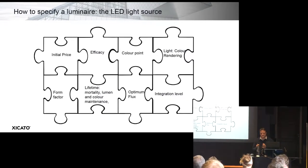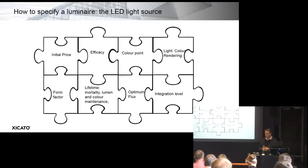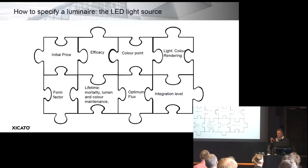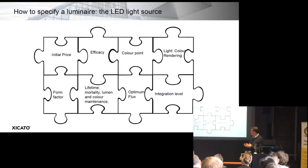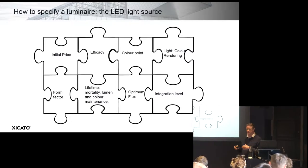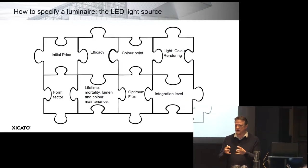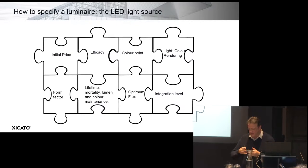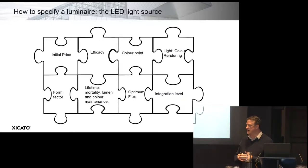I kick off this quartet of mini-talks on specifying a luminaire by talking about the light source itself. My fellow speakers will come on to optics, build quality and this sort of thing, but it seems logical to start with light itself. I have split the attributes — price, efficacy, colour point, etc. I think it's a good scientific discipline to do it this way, but actually they are all interlocked. To look at each one in isolation does have some shortcomings.